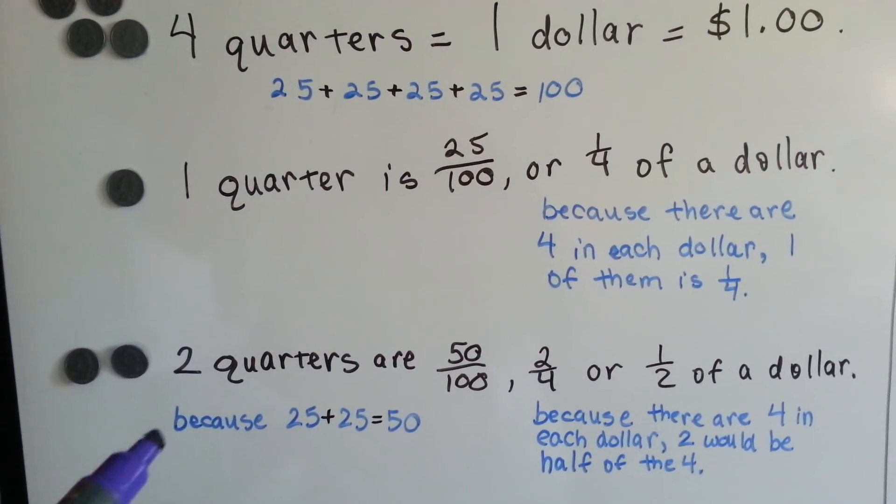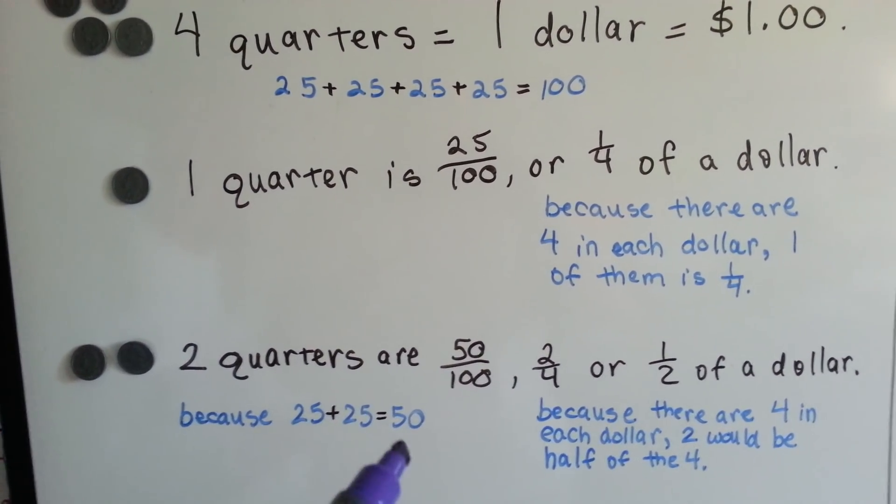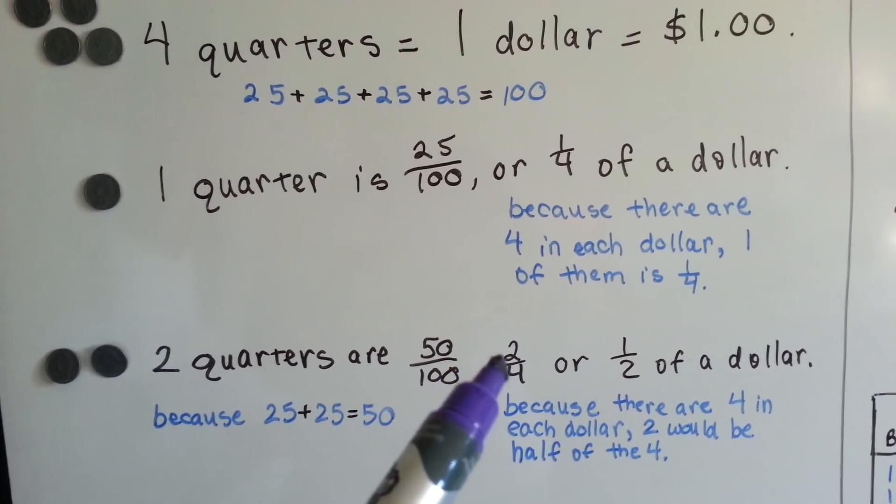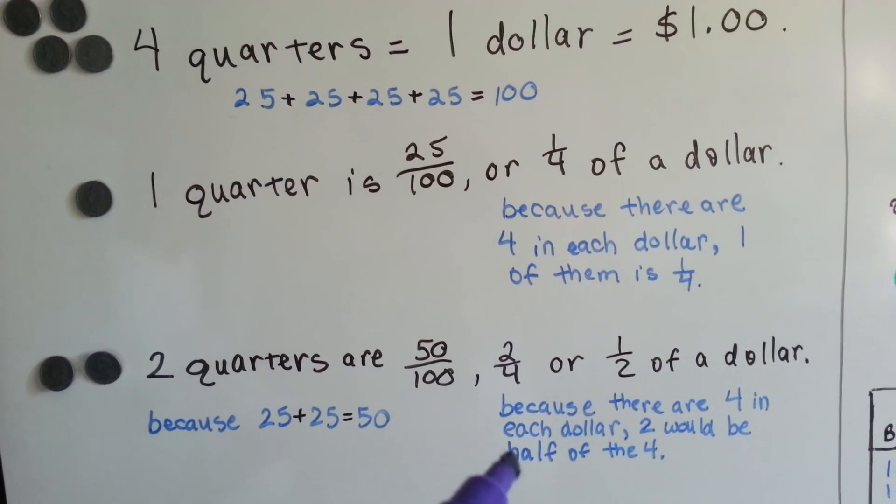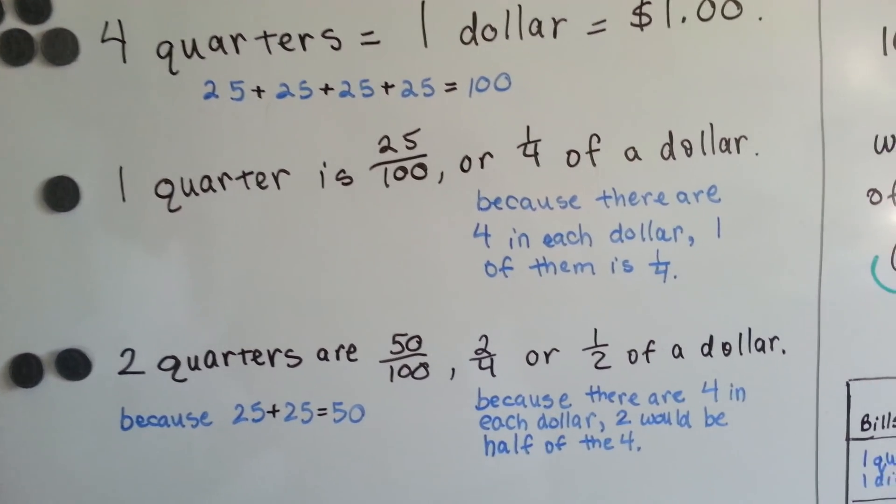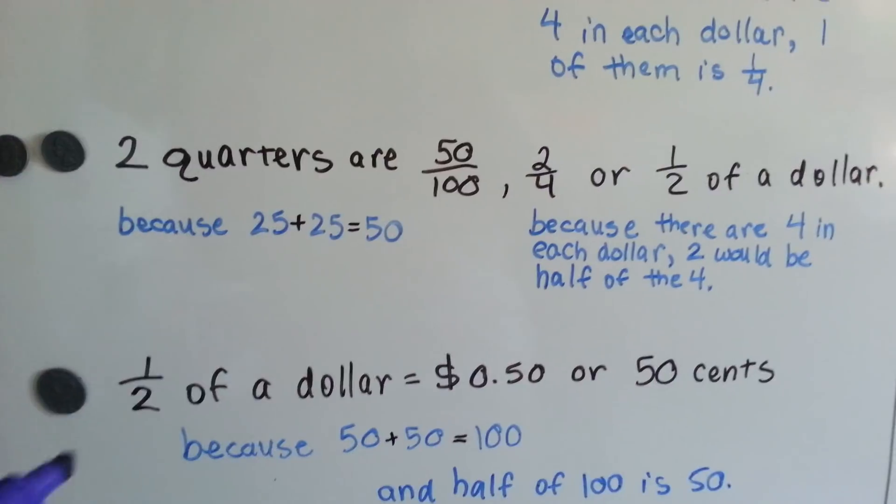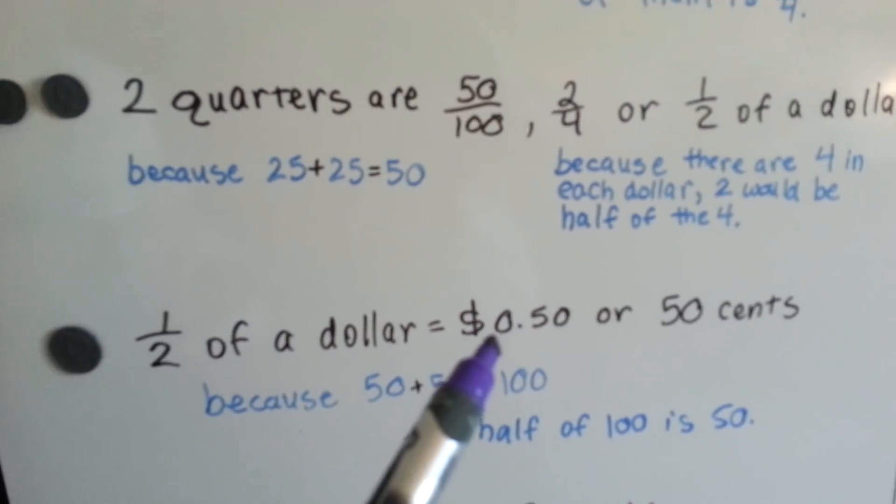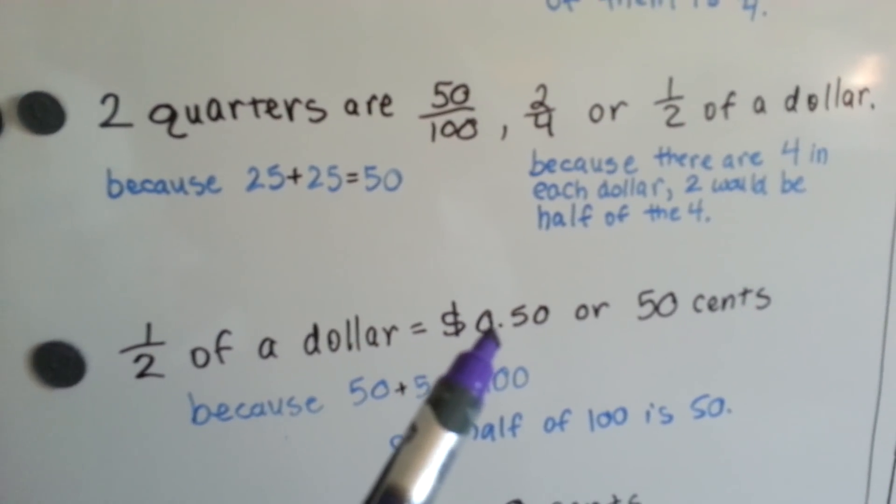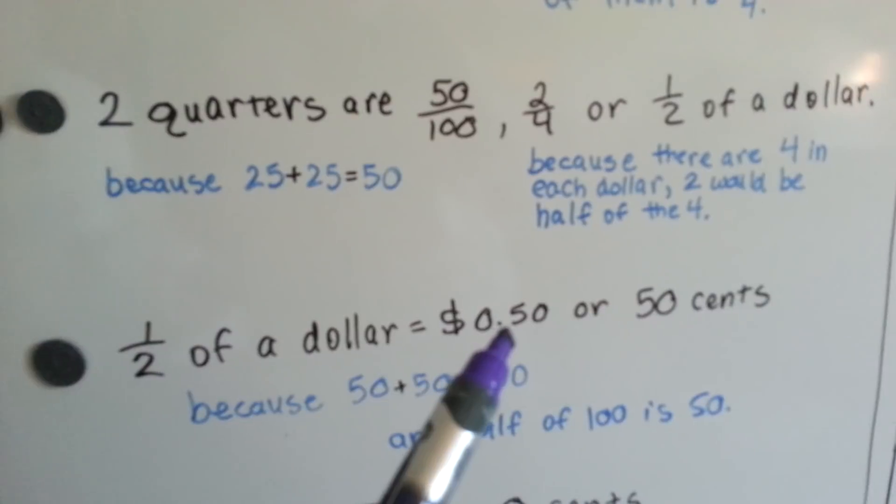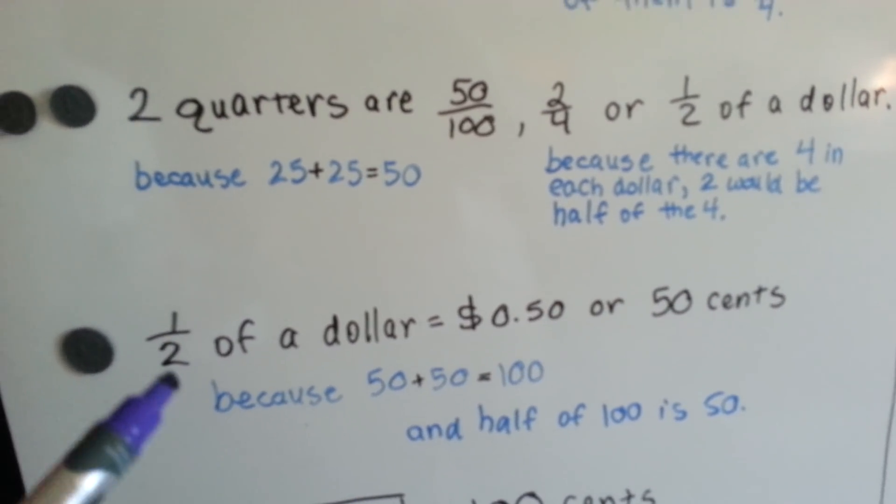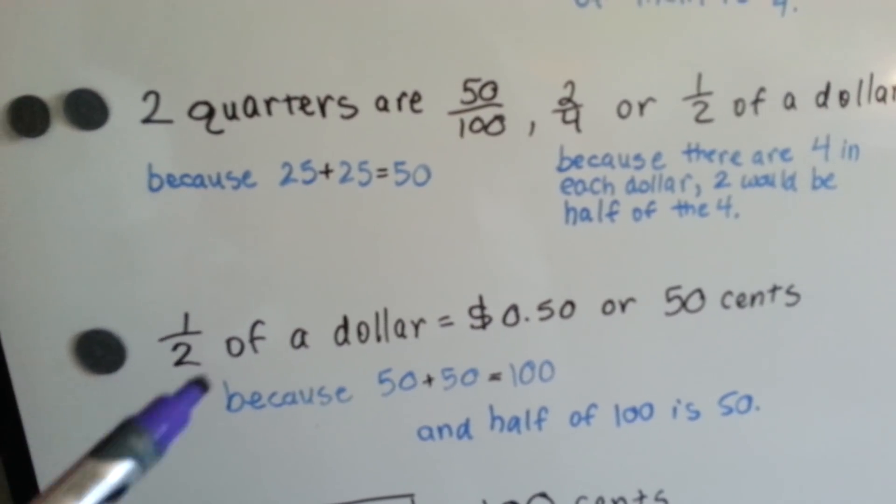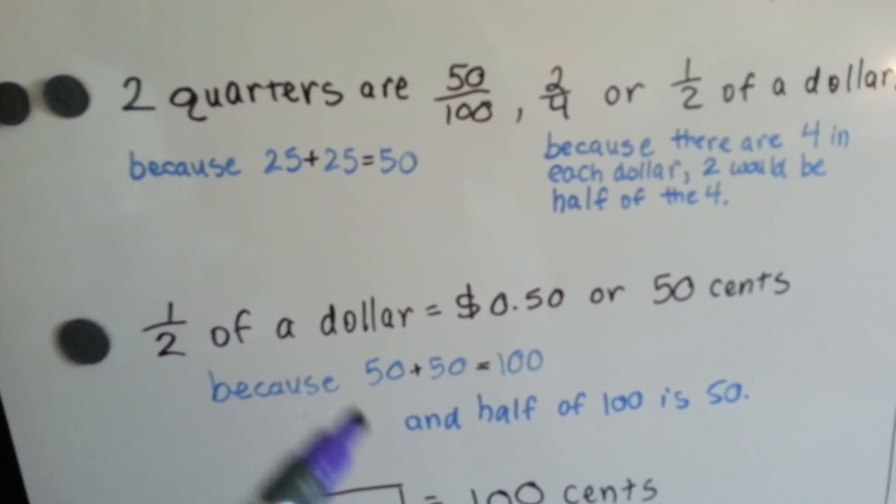Two quarters are 50 cents, because 25 plus 25 is 50, and they're each worth 25. And they're two-fourths, because there are four in each dollar, and two would be half, right? So they're half dollar. Half of a dollar is 50 cents, or it's written as the dollar sign with a decimal point with the 50, because 50 plus 50 is 100, so one of them, the 50, is half of the dollar. It's half of the hundred.